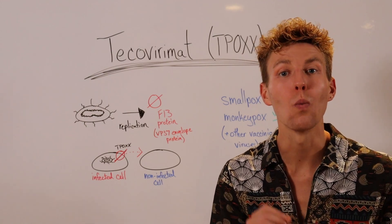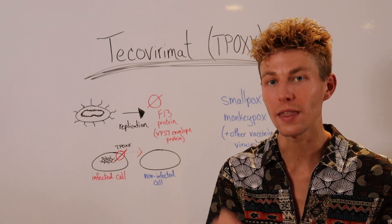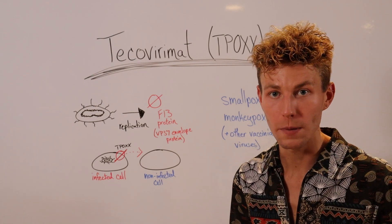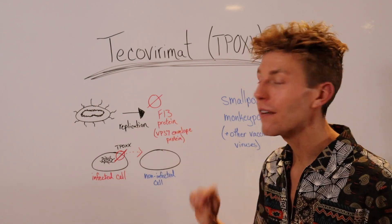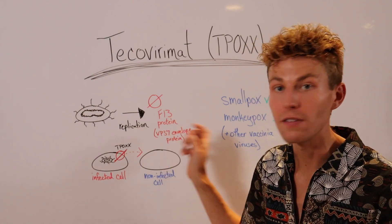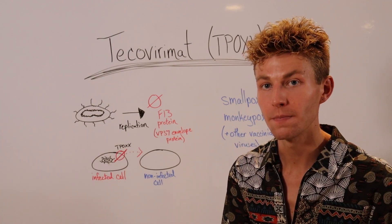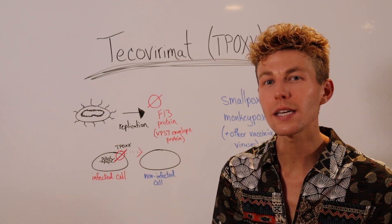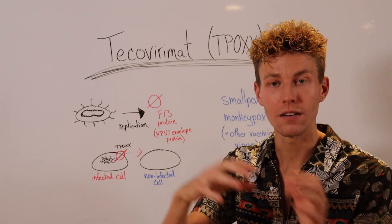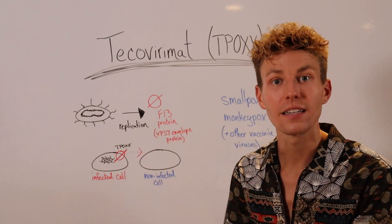However, T-Pox prevents one of the essential proteins within that virus from actually forming, and that protein is the F13 protein, also known as the VP37 envelope protein. That envelope protein is really essential for the virus to leave an infected cell and then infect a healthy cell.